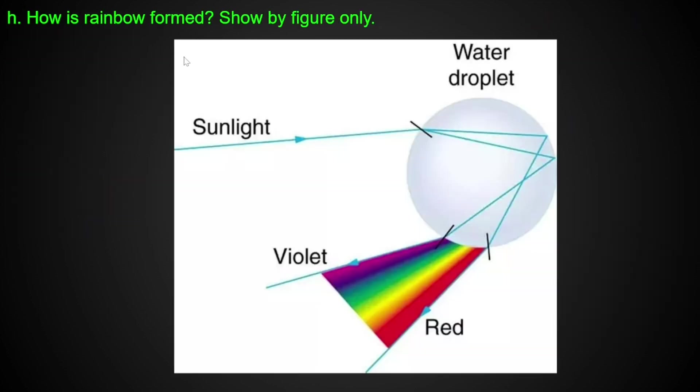How is a rainbow formed? The answer is explained by figure only — the difference is shown through a diagram.